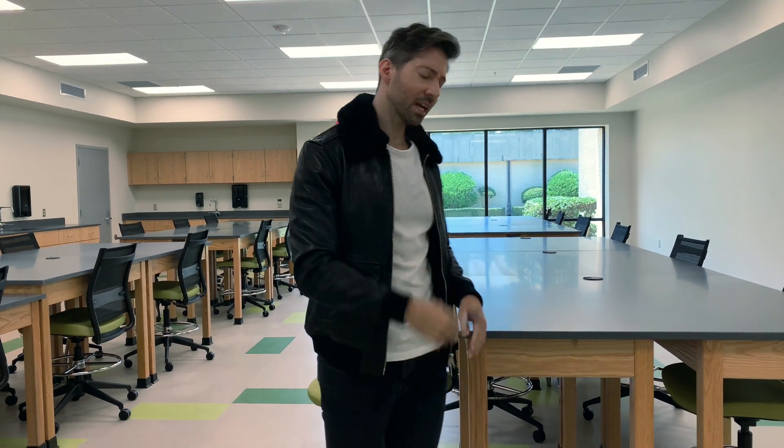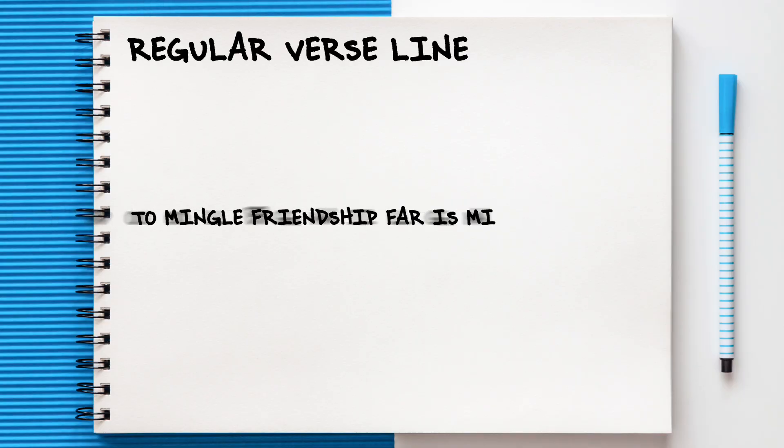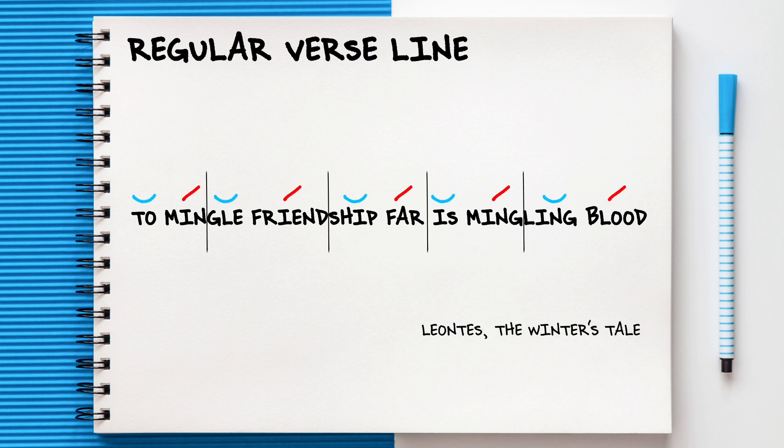Now let's talk about scansion. The majority of Shakespeare is written in verse, and more often than not, drama schools will ask you to prepare a monologue or soliloquy in verse. So, what is verse? And how can scansion help you, the actor? Verse is essentially poetry, and Shakespeare's poetry is written in iambic pentameter. That means in every regular verse line, there are ten syllables — five unstressed and five stressed — with an alternating metrical structure.